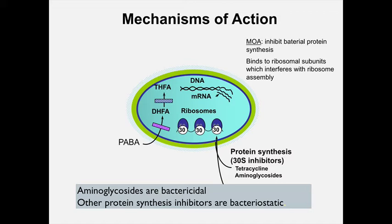In this video we're going to talk about the protein synthesis inhibitors: aminoglycosides, tetracyclines, and macrolides. Aminoglycosides are the first ones, and they're interesting because unlike the other protein synthesis inhibitors, these drugs are considered bactericidal. The other ones are considered bacteriostatic.